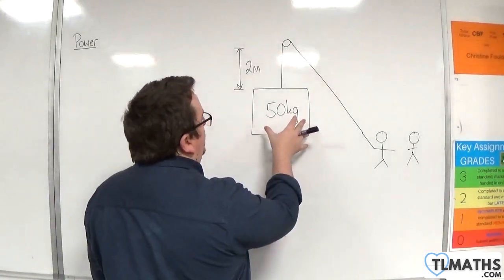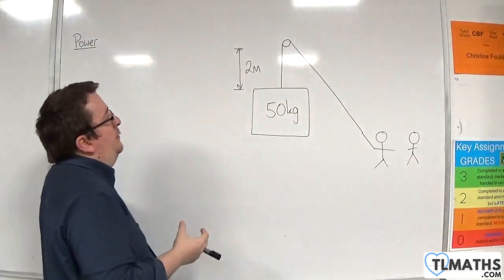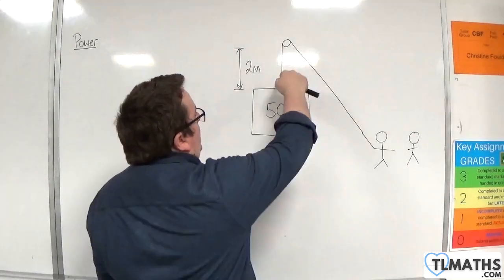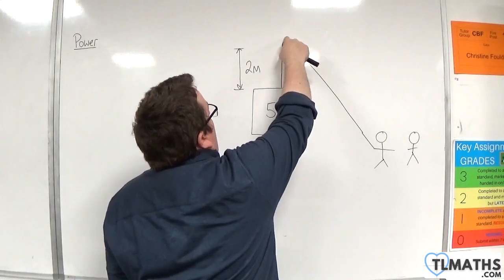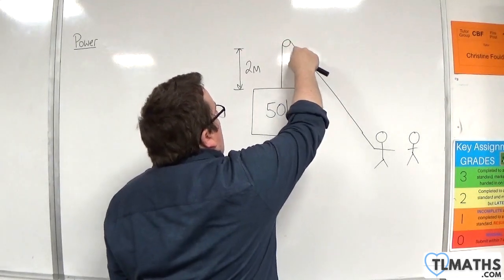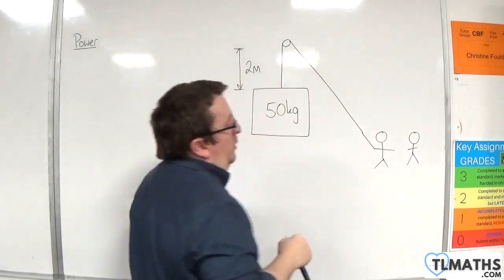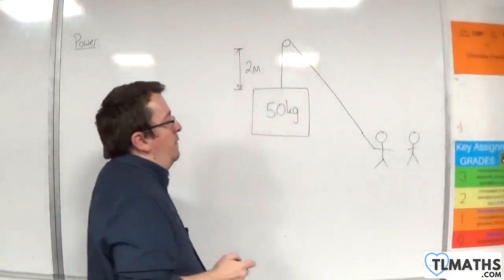So let's say we have a crate which has a mass of 50 kilos and it is attached to a rope that runs around a smooth pulley and then it is being pulled by a person down here on the ground.